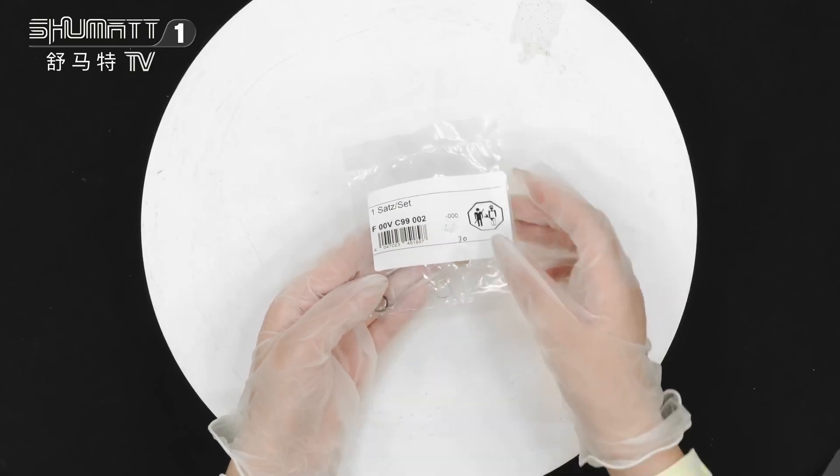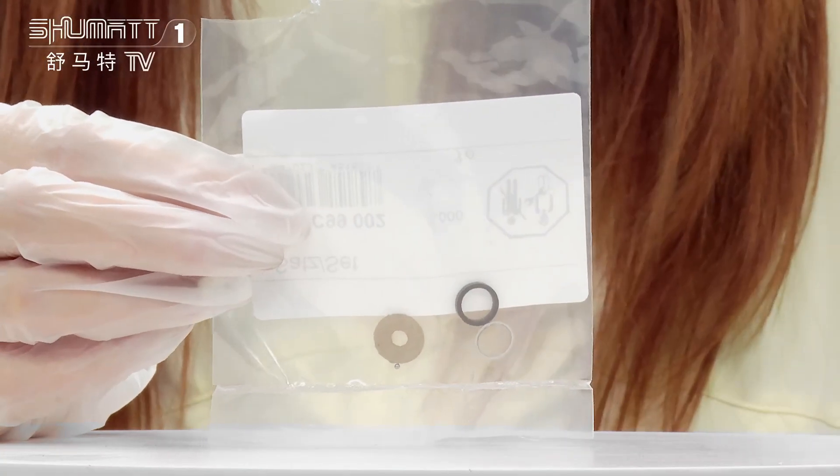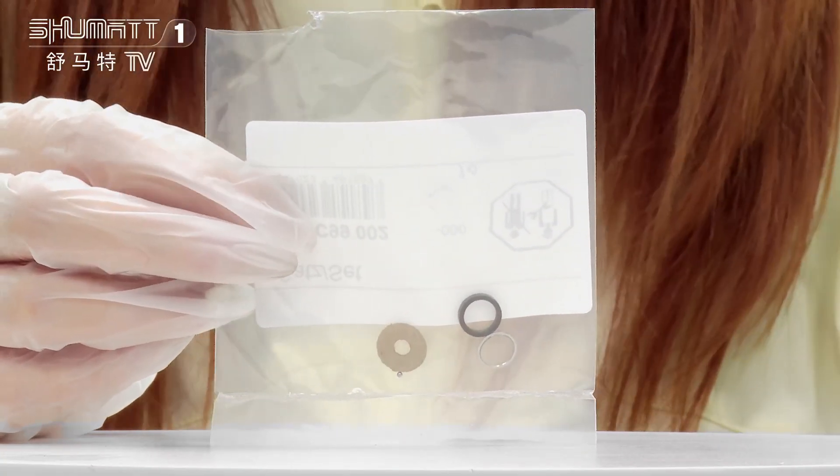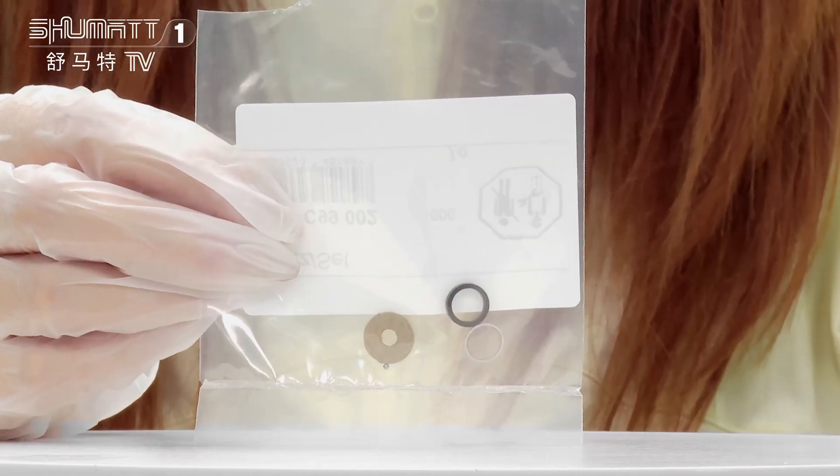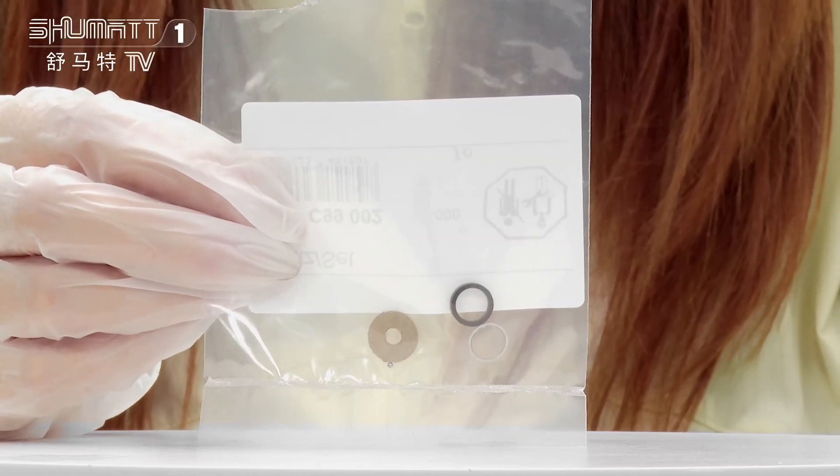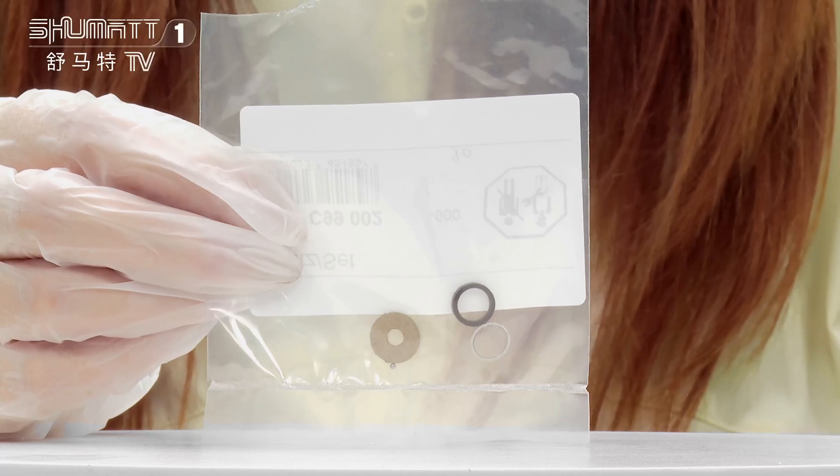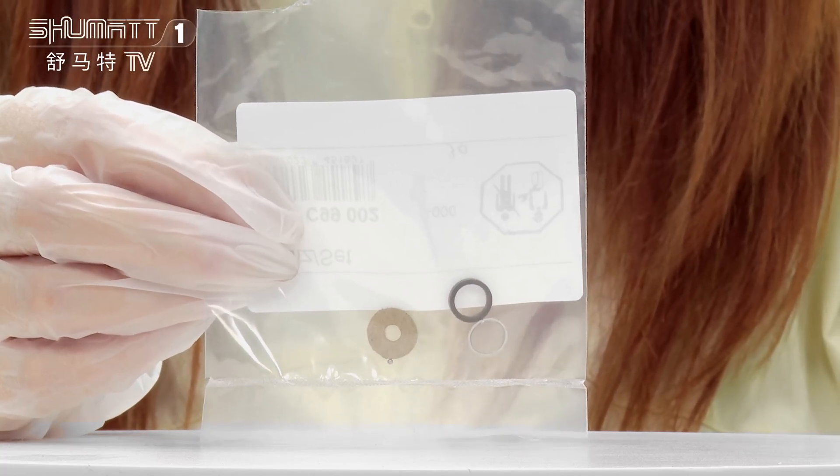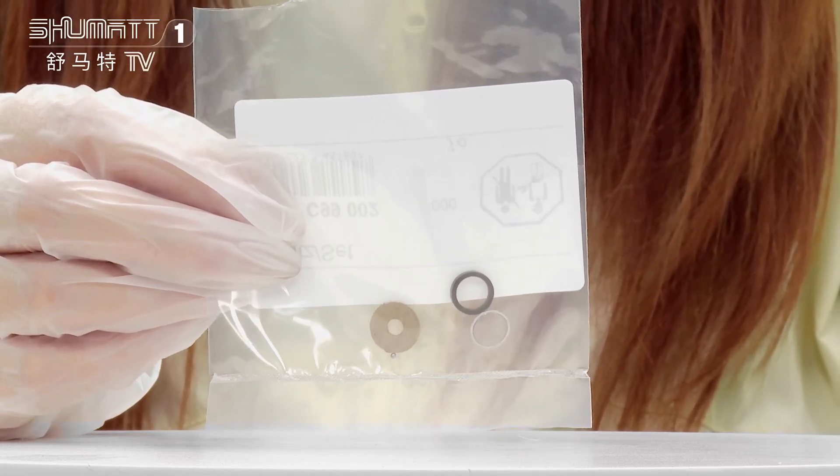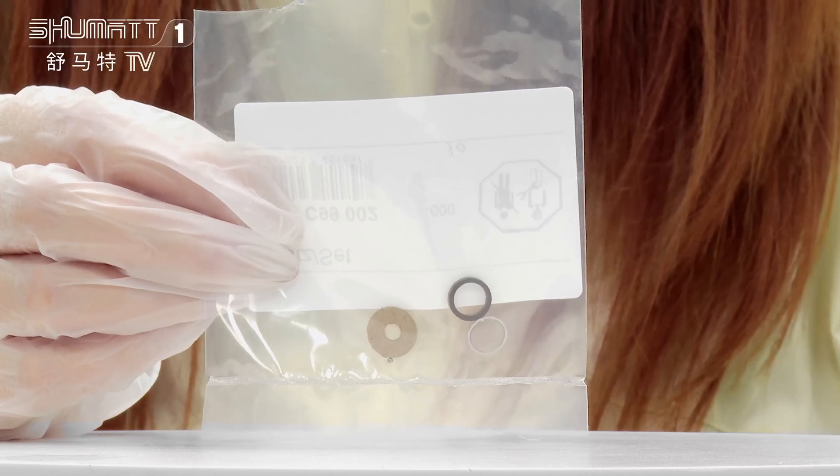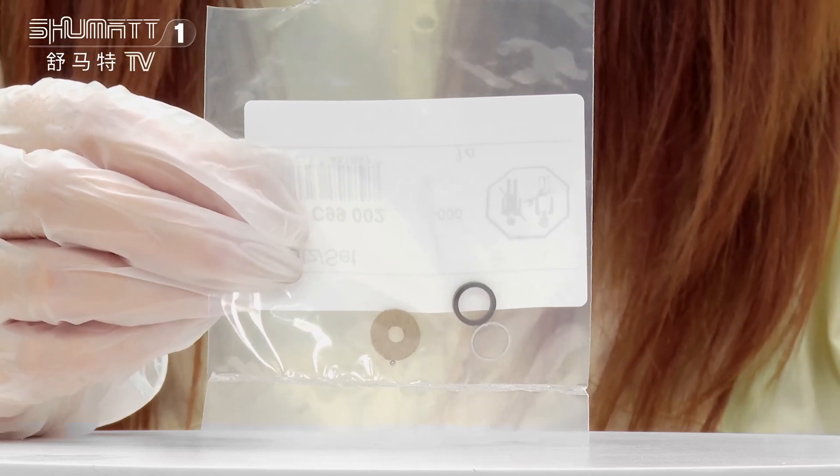Okay, let's take a look at this injector repair kit. The part number I mentioned is F00VC99002, 1.34 millimeter. The white ball is 120 series. This kit includes sealing ring, support ring, white ball, and O-ring.